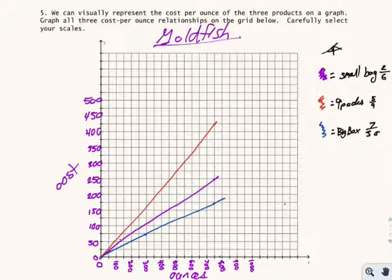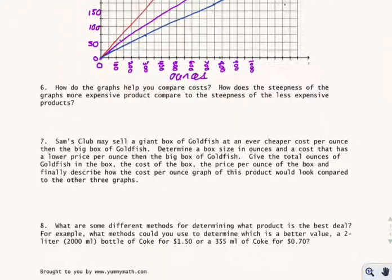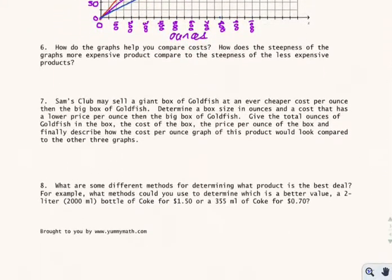Now that your graph is completed from question number 5, you're going to be able to answer questions number 6, 7, and 8. Number 6 says: how do the graphs help you to compare costs? What does the steepness of the graph's more expensive product compare to the steepness of the less expensive products?